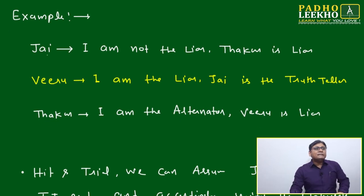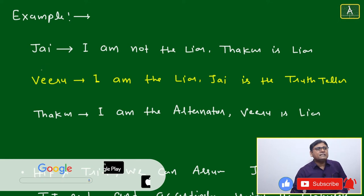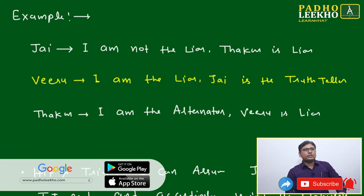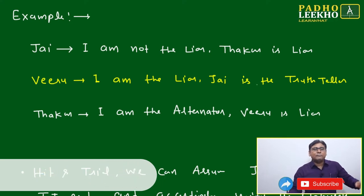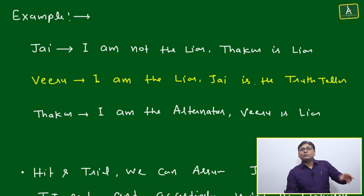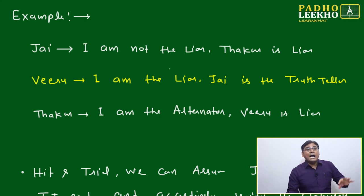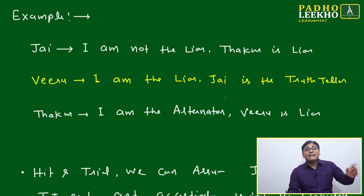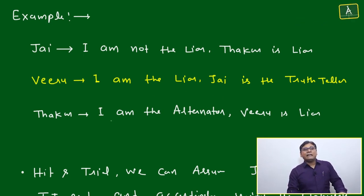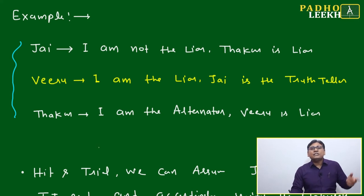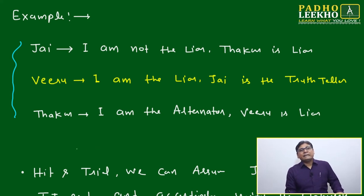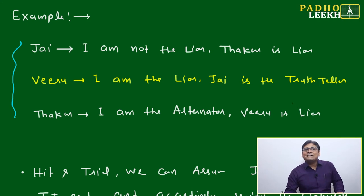Let's take an example with characters from the film Sholay: Jay, Viru, and Thakur. Jay is saying: 'I am not the liar' and 'Thakur is a liar.' Viru is saying: 'I am not the liar' and 'Jay is the truth teller.' Thakur is saying: 'I am not the alternator' and 'Viru is a liar.' How do we resolve who is the truth teller, liar, and alternator?